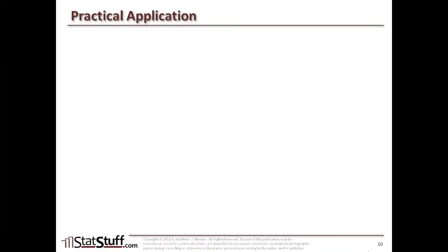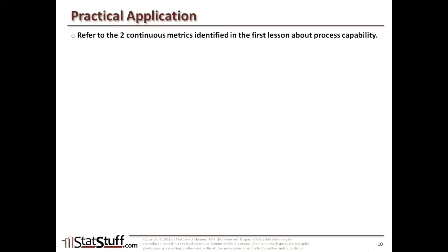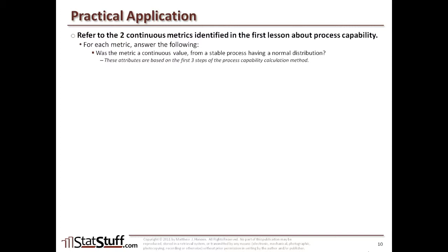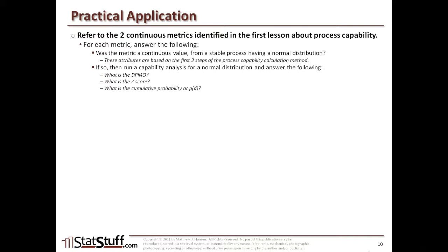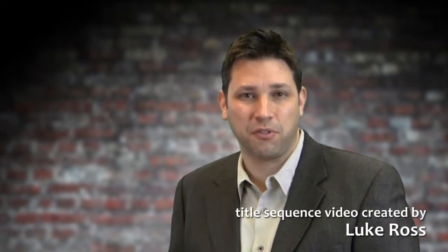Before we close this lesson, let's discuss how to apply these concepts practically. Go back to the two continuous metrics you identified in the first lesson on process capability. For each metric, first answer whether the metric is a continuous value from a stable process with a normal distribution — these are the first three steps to determine which capability method to use. If it meets those conditions, run the capability analysis for normal distribution and answer: What is the DPMO? What's the z-score and cumulative probability? What are the CPK and PPK? And based on that information, is the process capable or not? That wraps up this lesson. Check out statstuff.com for more resources. I'm Matt Hanson — thanks for watching.